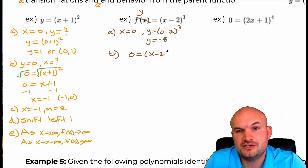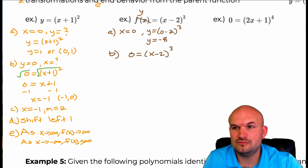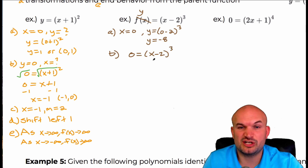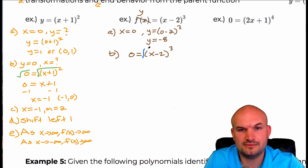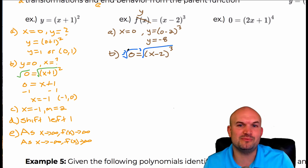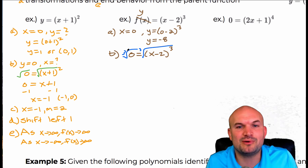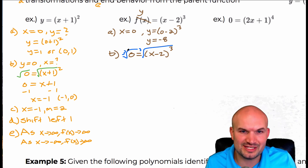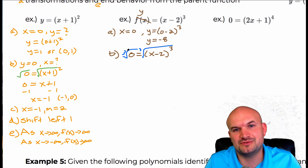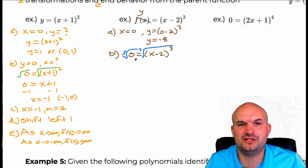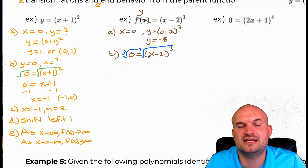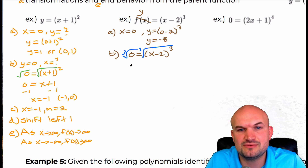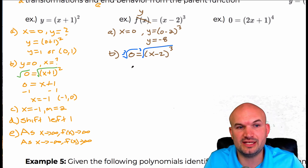We have zero equals x minus two cubed. We're going to use the cube root property, basically taking the cube root of both sides. The nice thing about having this binomial — you could use the zero product property, and I'll take a look at that shortly.